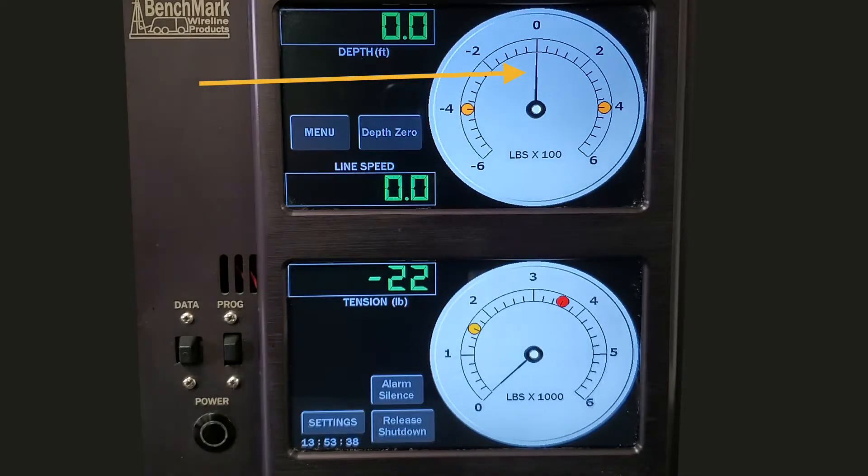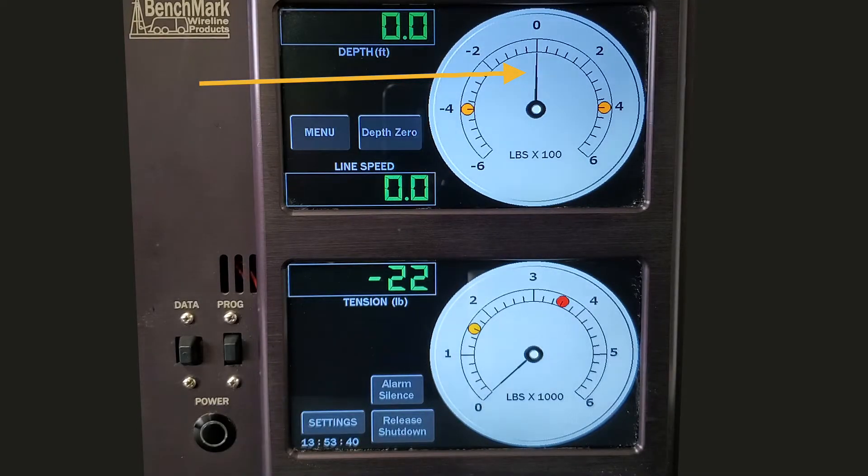Differential tension measures unexpected positive or negative changes in tension. If the line gets stuck or is not descending or ascending properly, differential tension will change and an alarm may sound. When the dial stays near the middle zero point, line tension is within parameters.